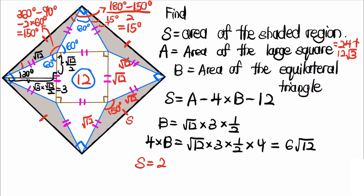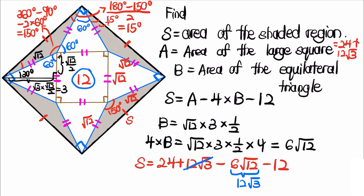So s equals A minus 4B minus 12, which is (24 plus 12√3) minus 6√12 minus 12. The term 6√12 equals 12√3, so those two cancel out, leaving 24 minus 12, which equals 12. The shaded area is just 12 — beautifully equal to the area of the square at the center. And so we are done.